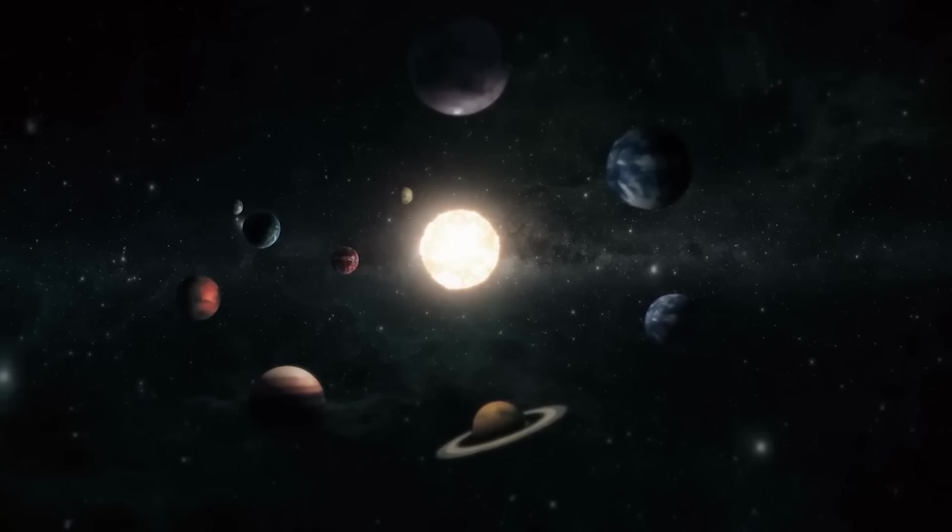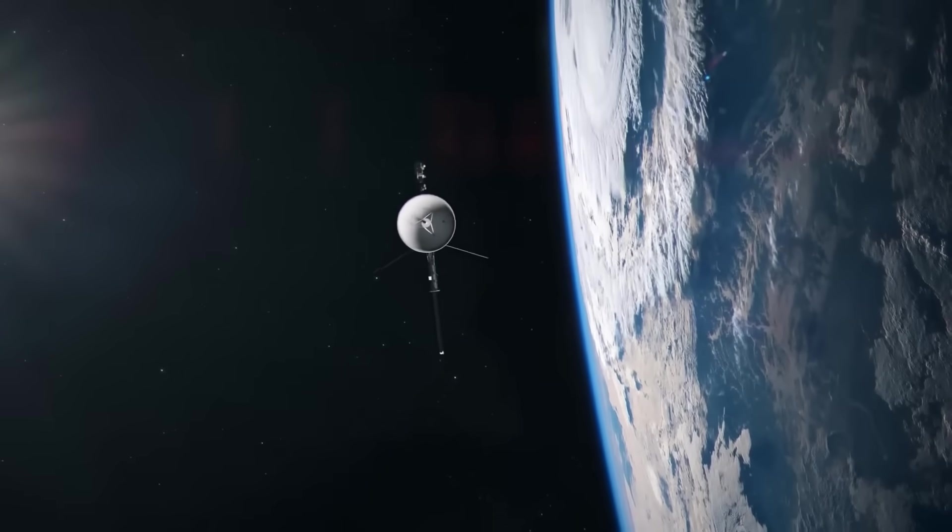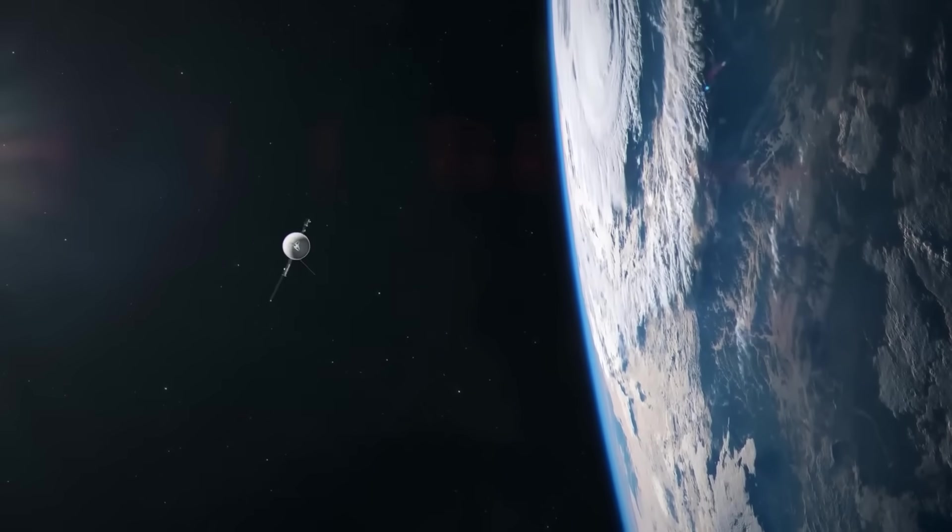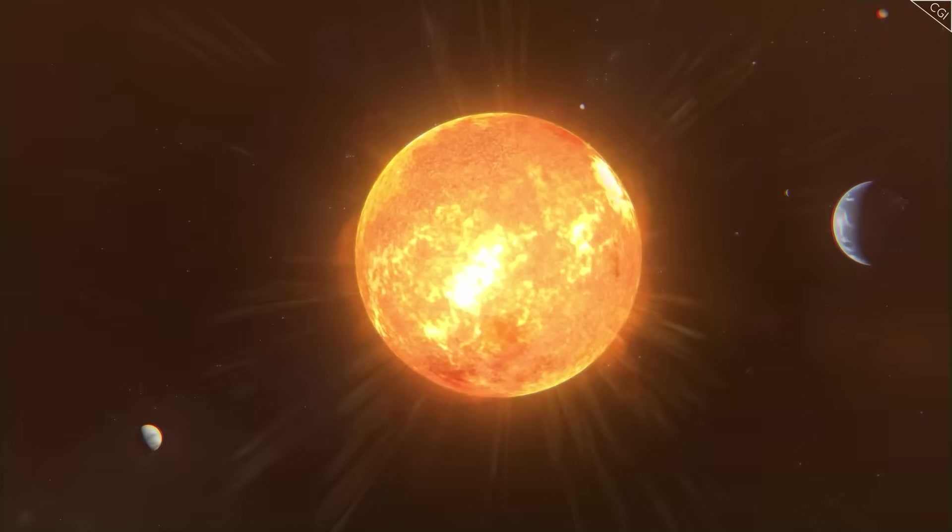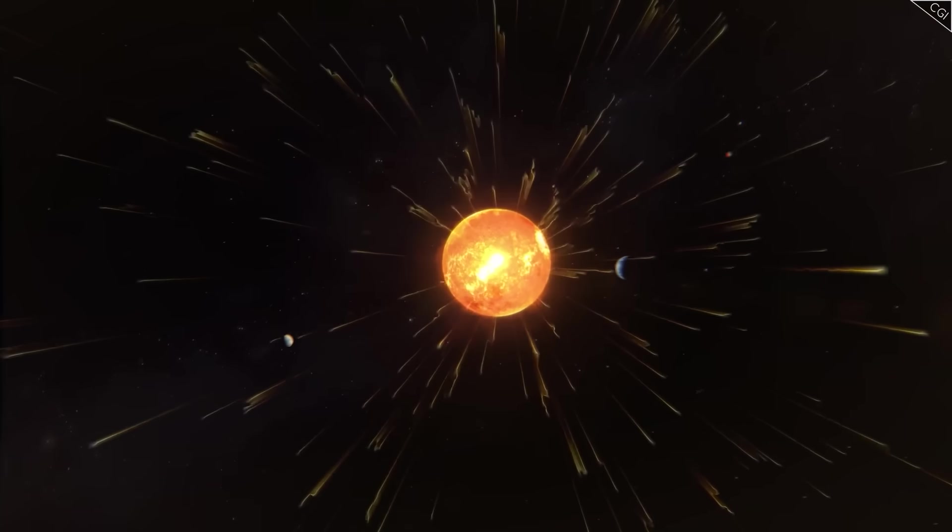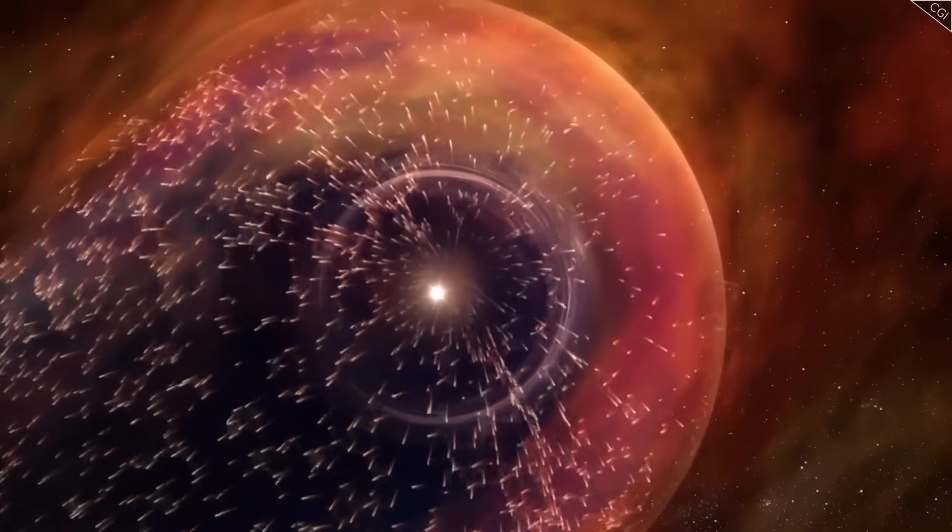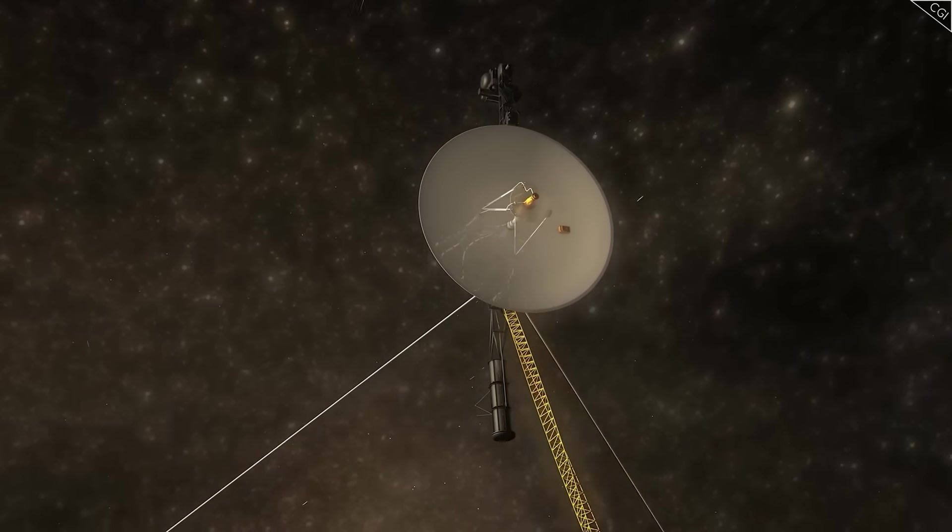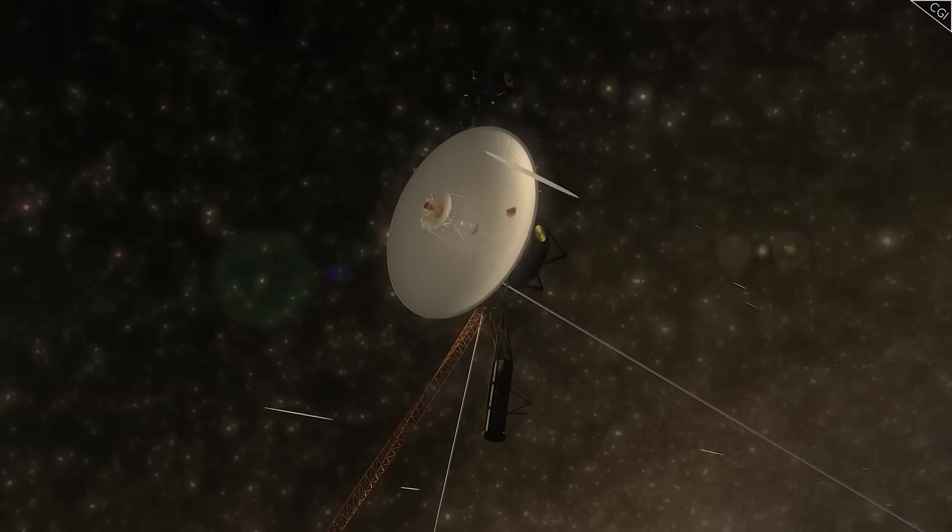Yet here we are, nearly five decades later, and Voyager is still alive, still transmitting across an unimaginable gulf of space. It has crossed the heliopause, the invisible boundary where the solar wind of our sun gives way to the raw chaos of interstellar space, and it continues into a region no human probe has ever ventured before.